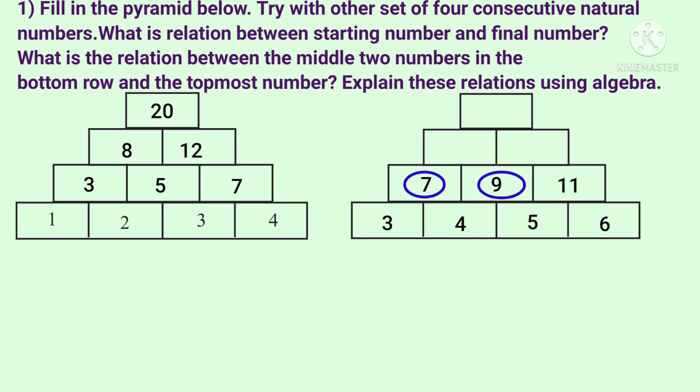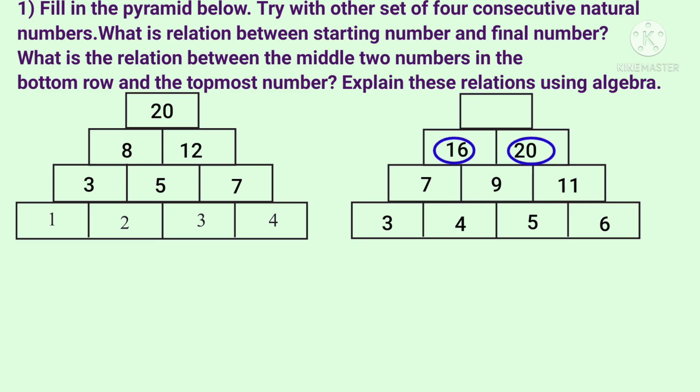7 plus 9 is 16, so 16 goes here. 9 plus 11 is 20, so 20 goes here. 16 plus 20 is 36, so 36 goes here. Now we have two number pyramids. The bottom row has consecutive numbers, so we have 4 numbers in the bottom row.